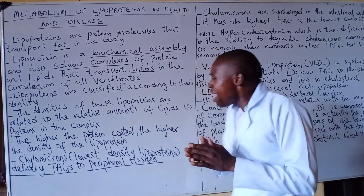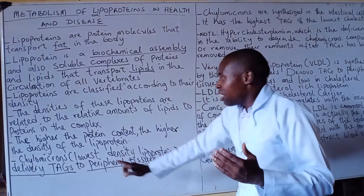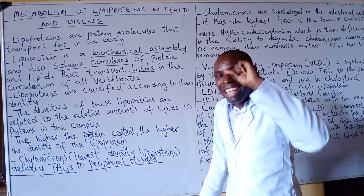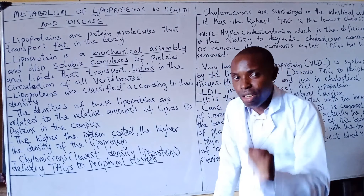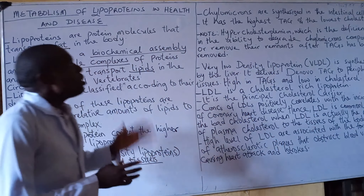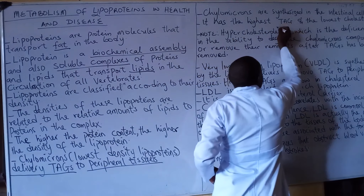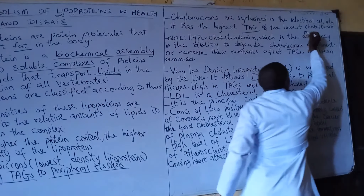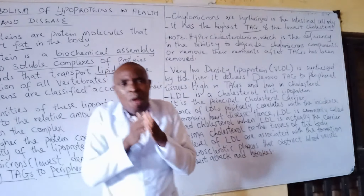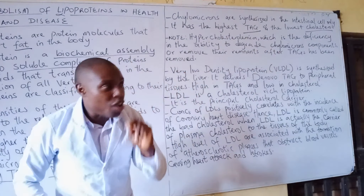Please take note that among all lipoproteins, chylomicrons have the lowest density, while HDL has the highest density. Also take note that chylomicrons are highest in TAG and lowest in cholesterol. Chylomicrons are lowest in cholesterol and highest in TAG — this is very important.